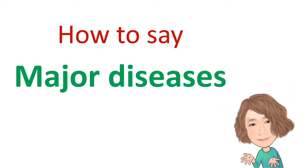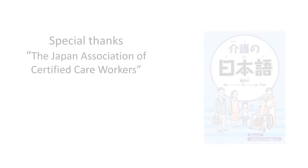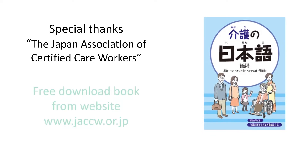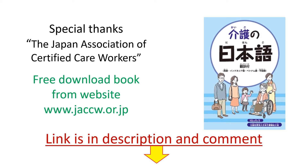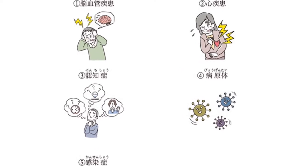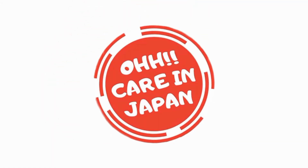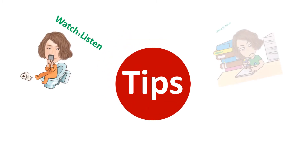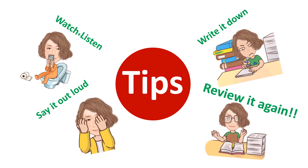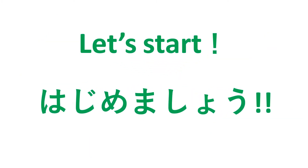How to say major diseases in Japanese. Watch and listen, write it down, say it out loud, review it again and again. Let's start. 始めましょう。大八章、そのほか。